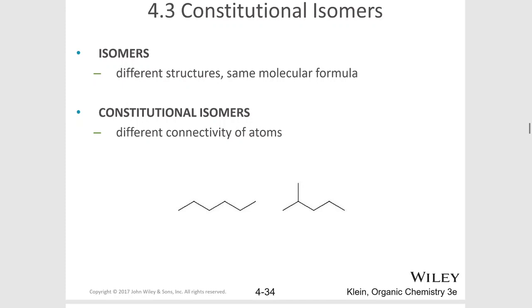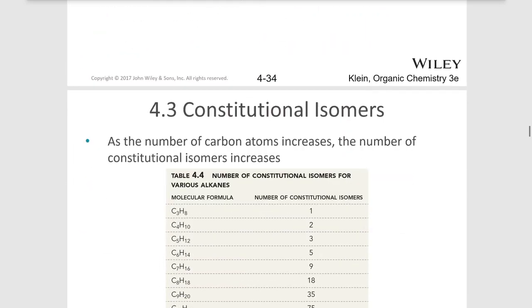For example, we have these two molecules here. We have one, two, three, four, five, six carbons. So this would be hexane, and then we have an isomer of hexane that's two methyl pentane. So these are constitutional isomers because they have a different connectivity of the same atoms.